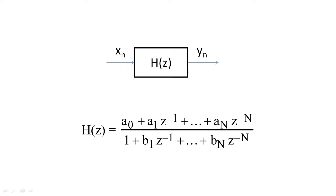Digital filters can typically be represented as a ratio of polynomials. Here capital N corresponds to the number of delays in the system, and capital N is called the order of the filter. So, a filter with two delays is called a second order filter.